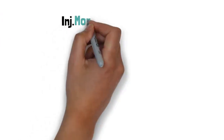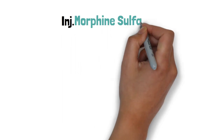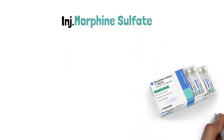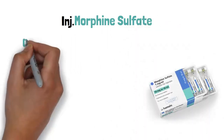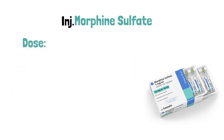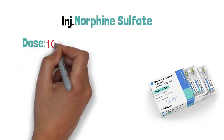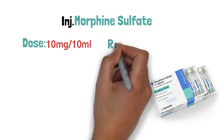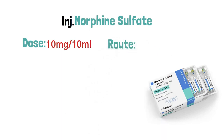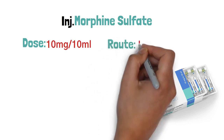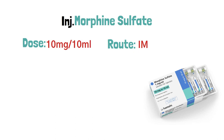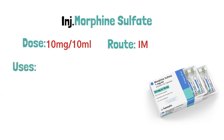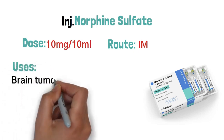Next injection is morphine sulphate. The dose is available in 10 mg and 10 ml. We can use it as IM only. We can check here the uses and side effects.